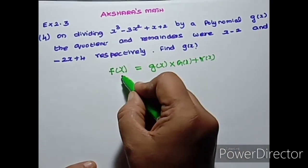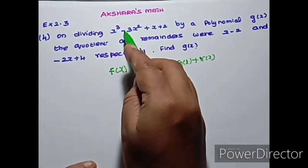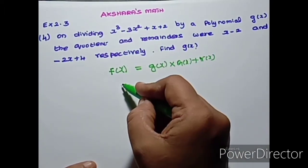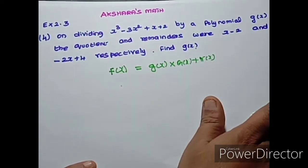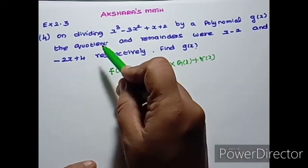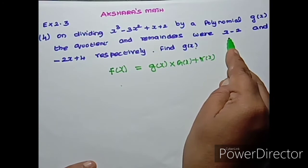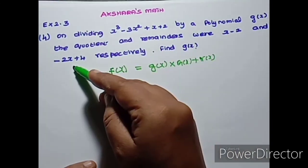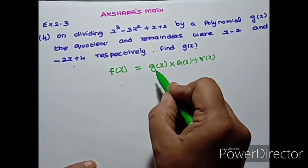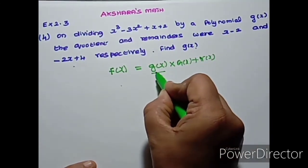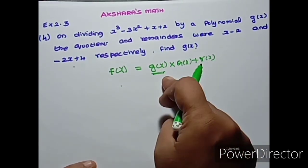Here, f of x is the dividend polynomial x cube minus 3x square plus x plus 2. We have to find g of x. The quotient q of x is x minus 2, and the remainder r of x is minus 2x plus 4.